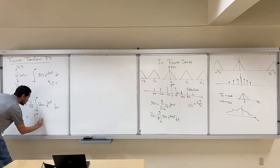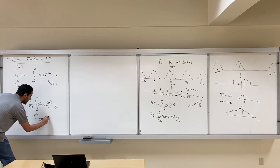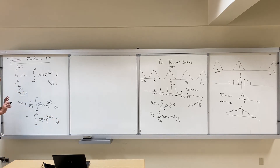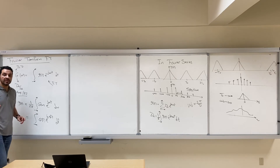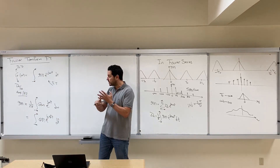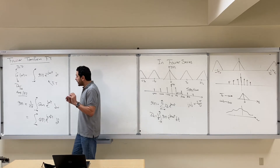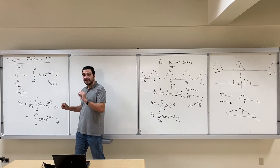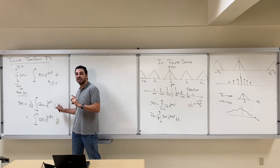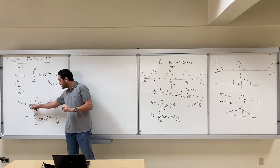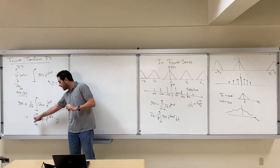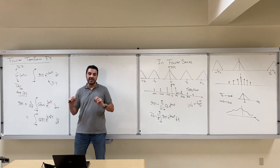If you use the frequency f in the expression instead of ω, then you don't have to divide by 2π. So if you use g(f) exponential j2πft df, there is no 2π in the expression. In our course, you have to be comfortable using both f and ω. Any expression with dω will have a division by 2π; any expression in terms of f will not have the 2π.